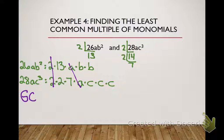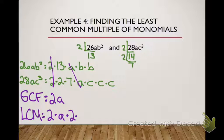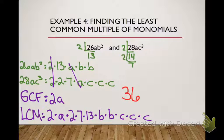So what's our GCF? 2A. Now, we write the LCM in expanded form. 2 times A times 2 times 7 times 13 times B times B times C times C times C.